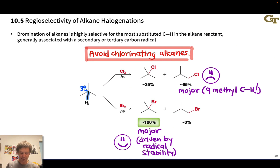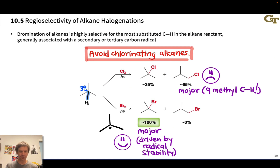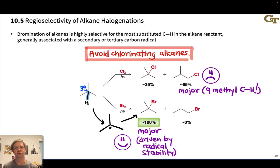This is driven by radical stability. Bromination at the tertiary carbon occurs via a tertiary carbon radical, which is much more stable than a primary carbon radical. That stability difference is felt when we use bromine because of that endothermic hydrogen abstraction step — the first step of propagation.